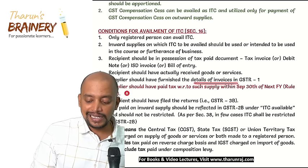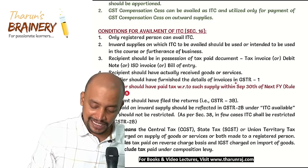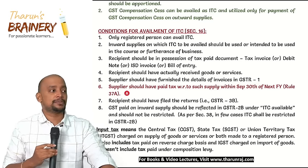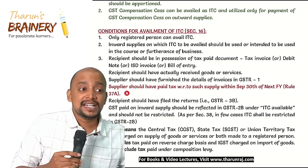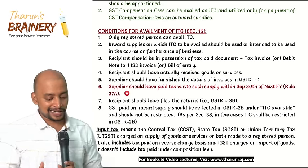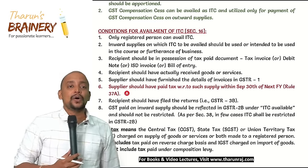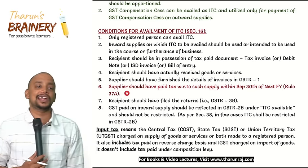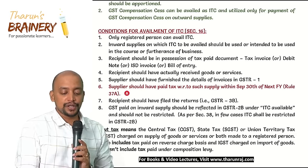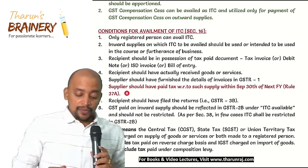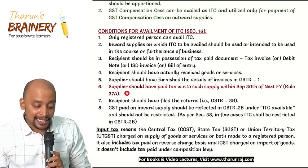Condition 7: The recipient should have filed GSTR-3B. ITC can only be availed in the credit ledger by filing GSTR-3B. Condition 8: GST paid on inward supply should be reflected in GSTR-2B under 'ITC available' and should not be restricted. As per section 38, in some cases even though the supplier reports details in GSTR-1, the recipient will not be able to take ITC because in GSTR-2B it will appear under 'ITC not available'.